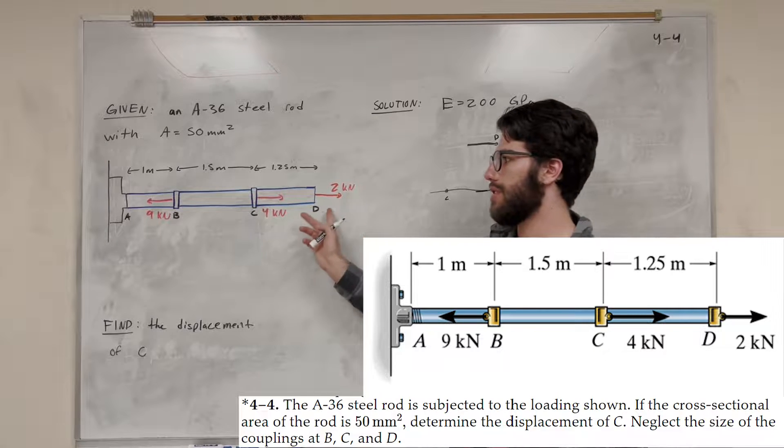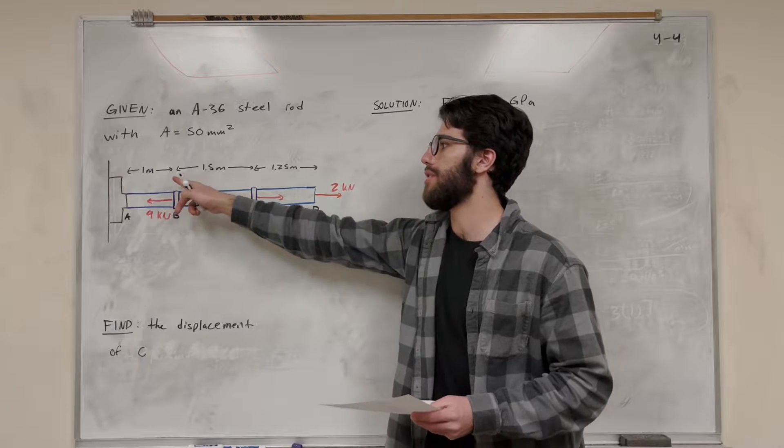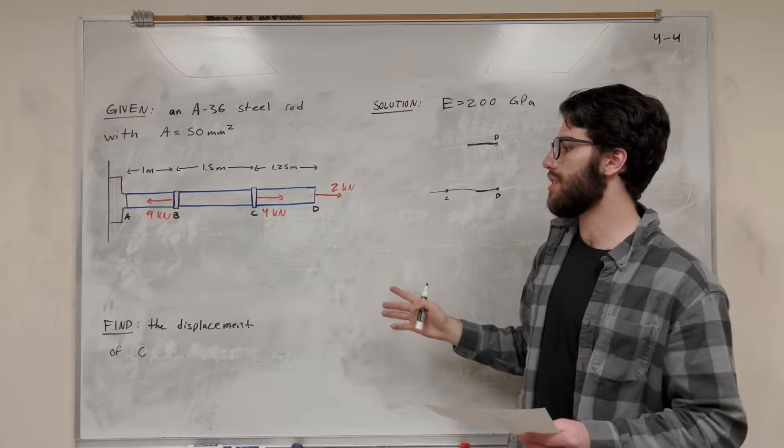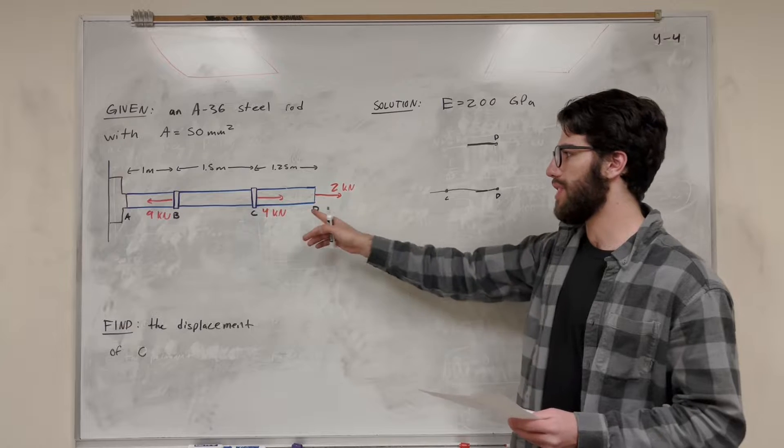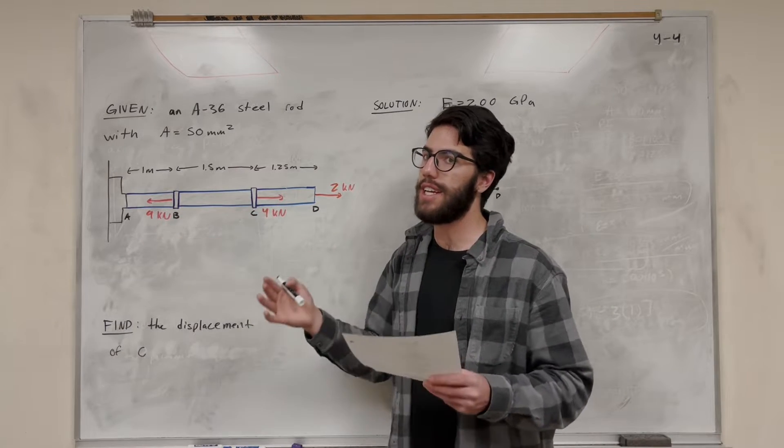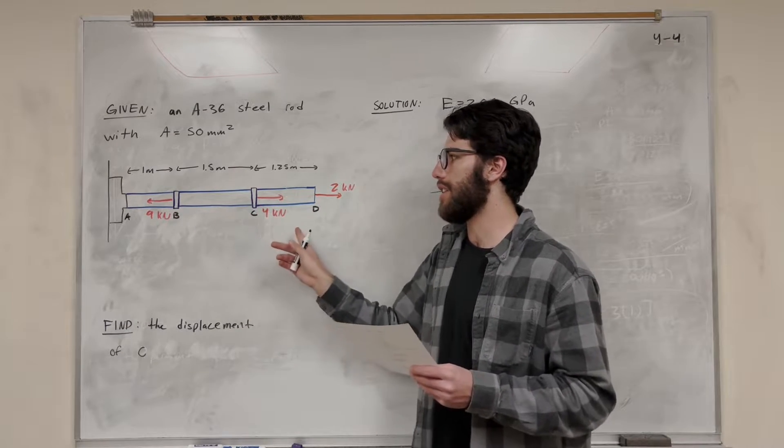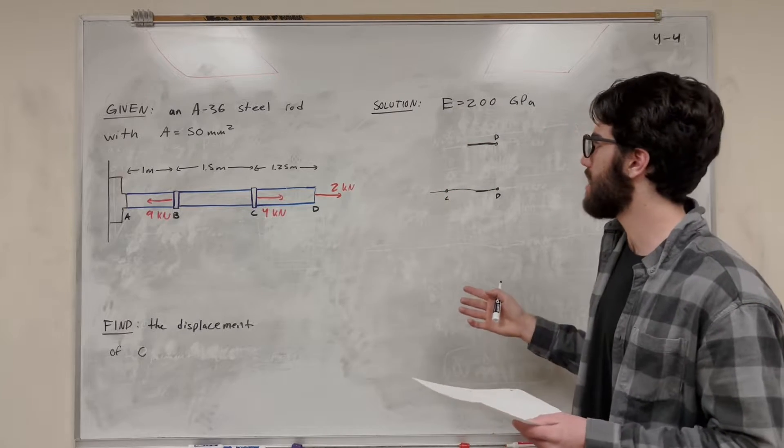But anyway, we have these three loads acting on this beam here, and there's three different sections, and our goal is to find the displacement of C. So how are we going to do that? Well, we have these forces acting at different points along the beam, so we're going to need to break it down into three separate sections to find the displacement. But in this case, we're only looking for the displacement of C.